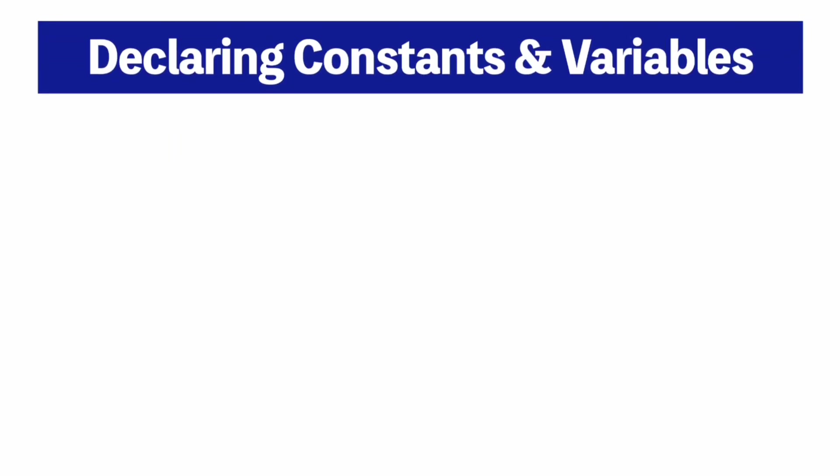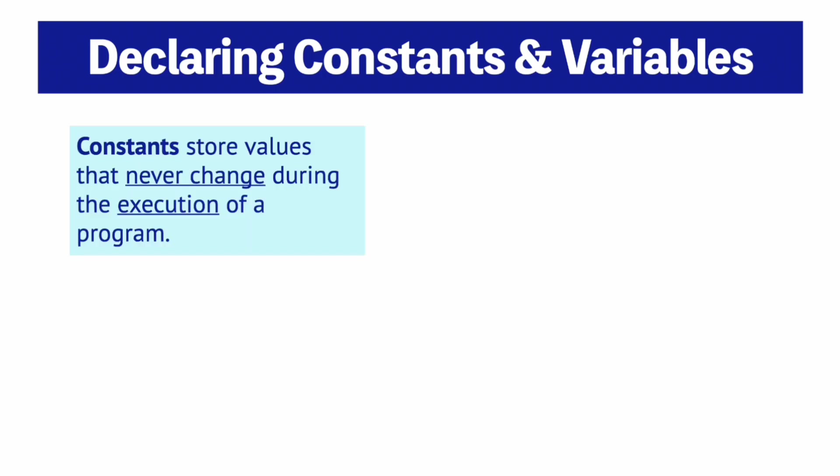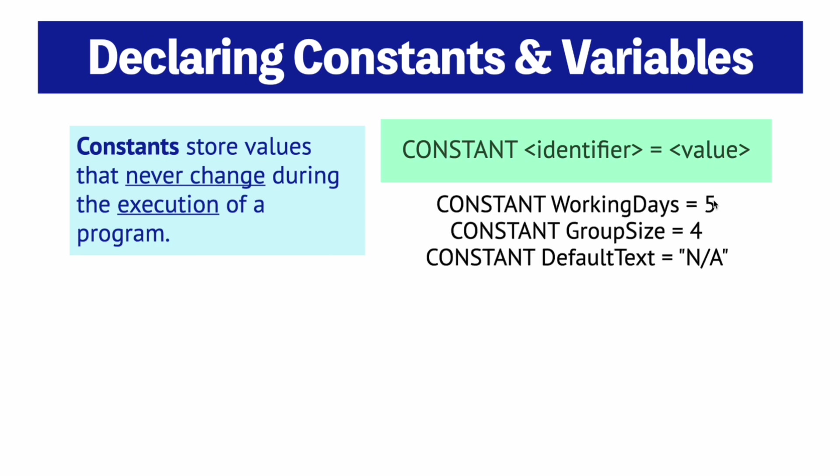First let's look at how to declare constants and variables which are like little containers that store values. A constant is a value that never changes while your program is running. To declare one you use the word CONSTANT in all caps then the name you want to give it, an equal sign, and the value. For example, let's say that your company has five working days in a week and that's never going to change. So you would make that a constant if you were to include this in your program.